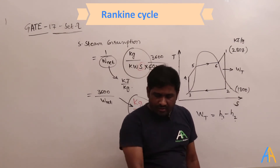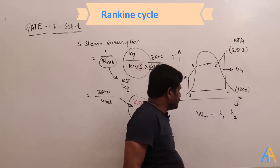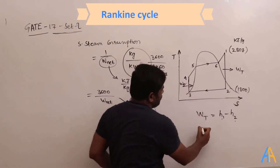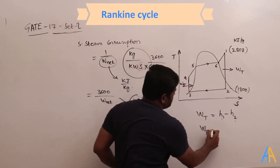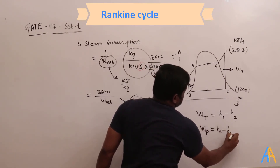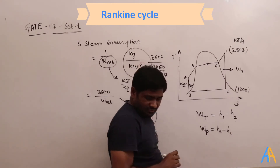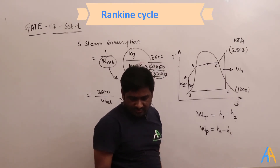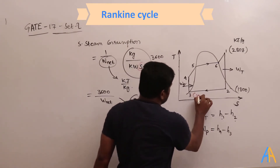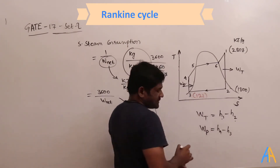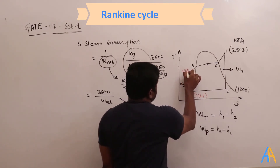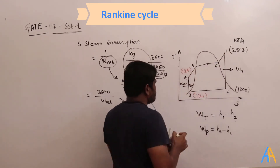We also need pump work W_P = h4 − h3. The pump entry enthalpy h3 = 121 kJ/kg and pump exit enthalpy h4 = 124 kJ/kg. All values are in kJ/kg.